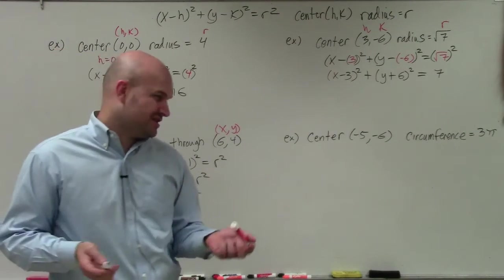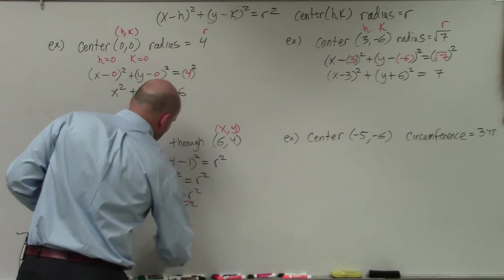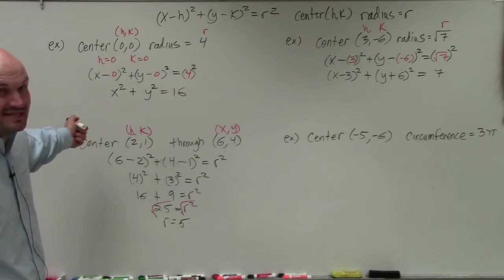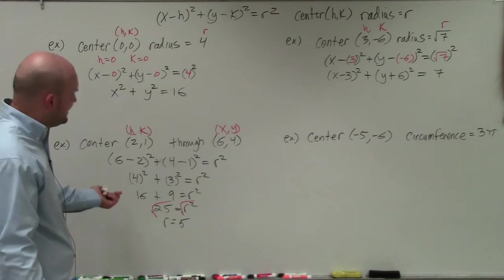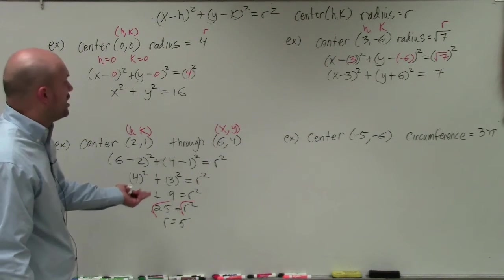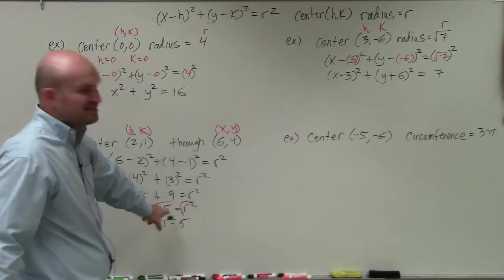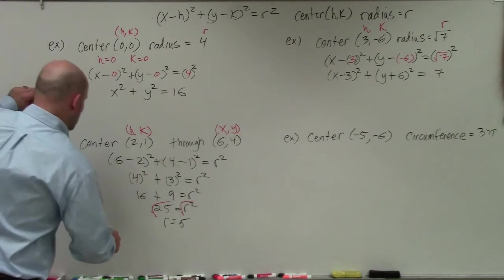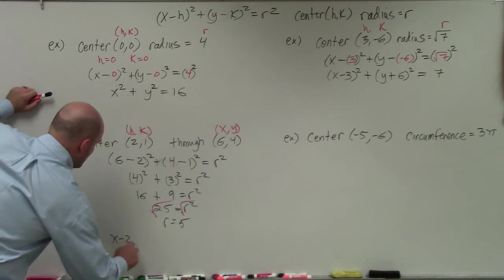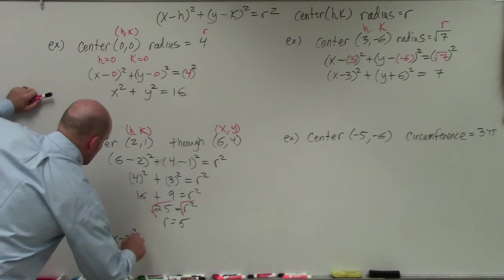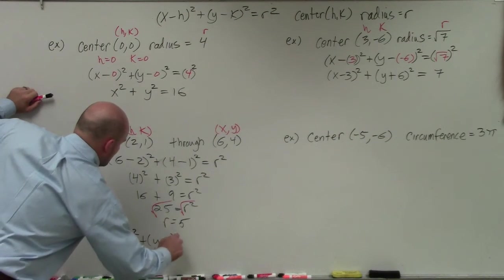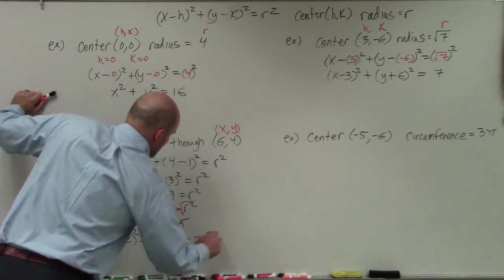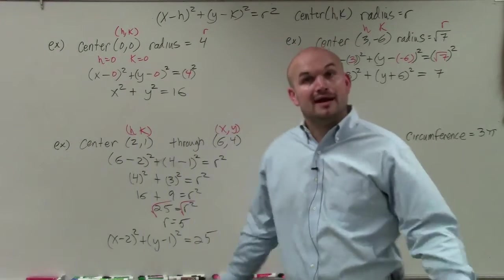r is equal to 25. So now I know what, actually, I didn't even need to do that. I'm sorry, r is equal to 5. OK, so now I know what the radius is, as well as the center. So what I can do, but I really actually don't even need to find r. I could have just plugged in r squared, right? So I could have actually not solved that, and just left it as r squared equals 25. But now I know what the center is. Let's go ahead and plug that in. So it's going to be x minus 2 squared, plus y minus 1 squared, equals r squared, which was 25. And there we go.